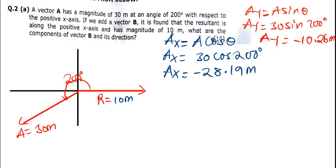Now I also have vector B. We don't know Bx or By — those are what we're trying to find.